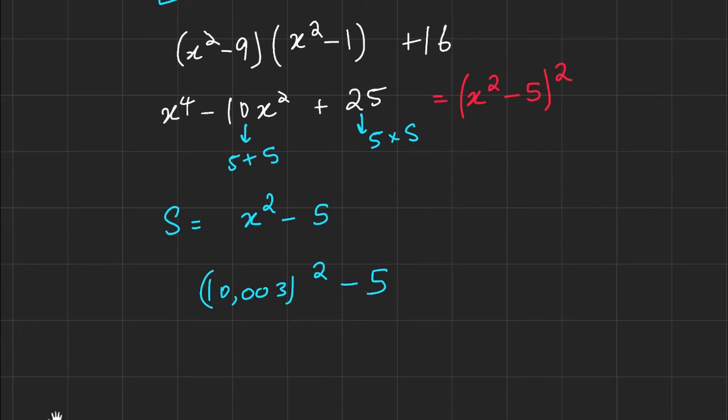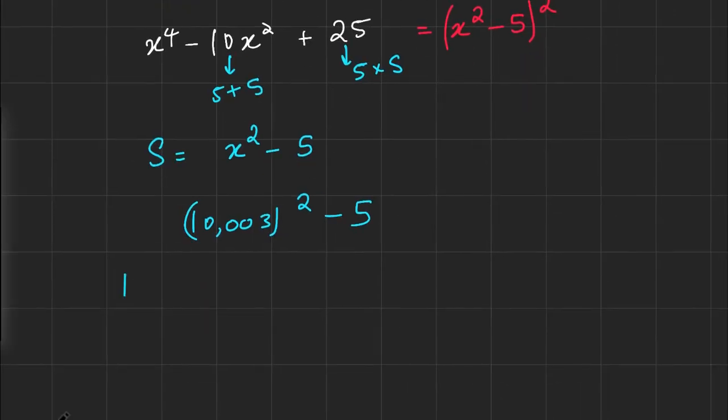So our answer would be 10,003 squared minus 5. But we can get an integer expression for this. We can just write this as (10⁴ + 3)² - 5. I can expand this now. This is going to be 10⁸ plus, well, that's going to be 6 times 10⁴ or in other words 60,000.